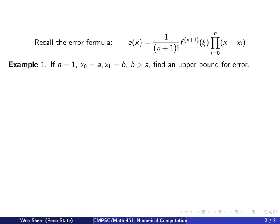In this example, we consider the simple case where n equals 1. That means we'll be taking only two interpolating points. Let's denote them by a and b, so our x_0 is a and our x_1 is b, assuming b bigger than a. We want to find an upper bound for the error.